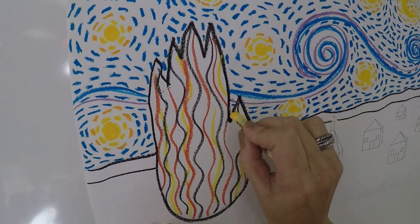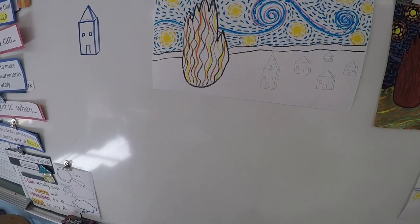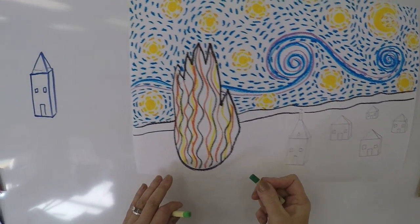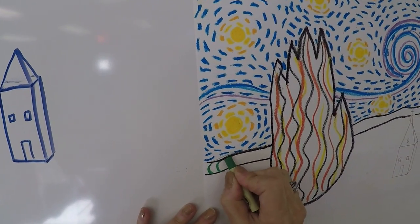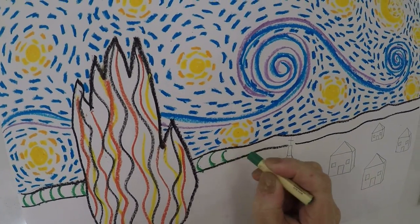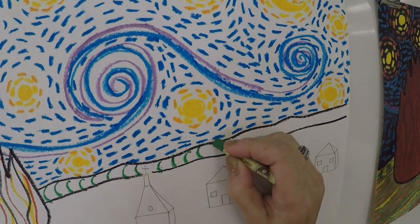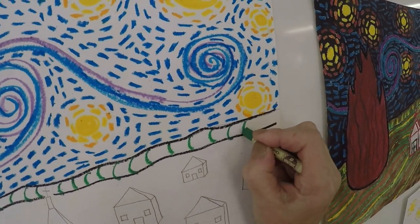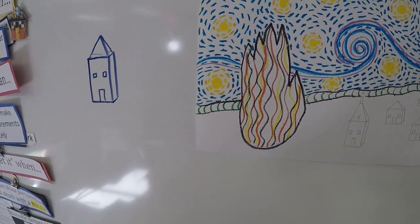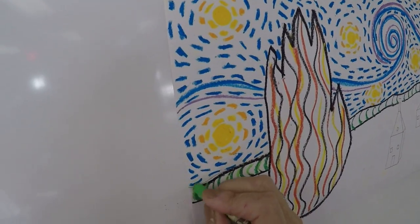Now for the back of our hill I want you to take a dark green and a light green. What you want to do is these little almost like letter C's and you want to just completely do it all the way up this rolling hill. That was the dark green.